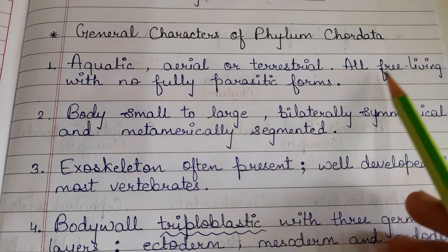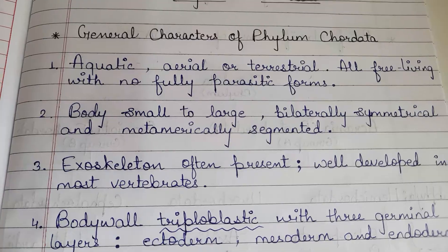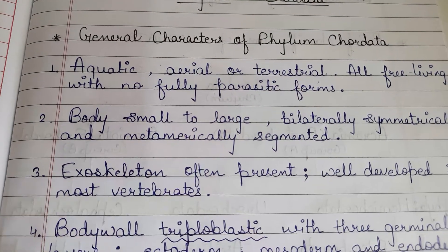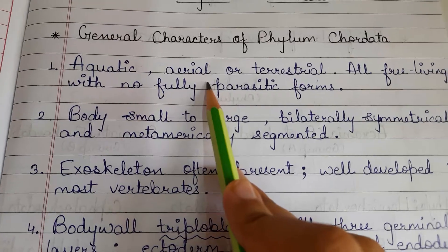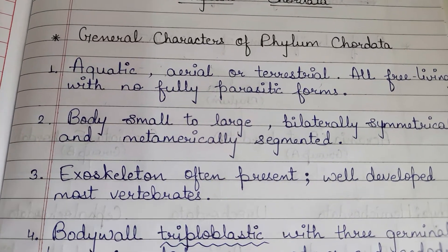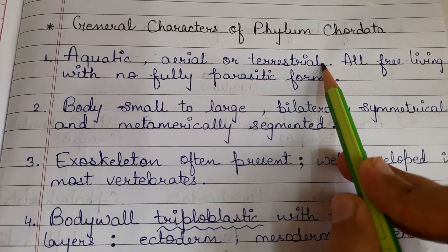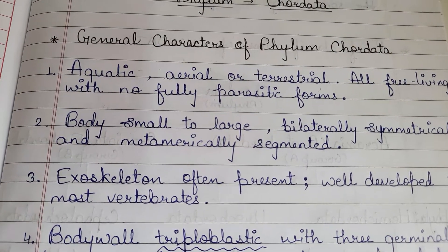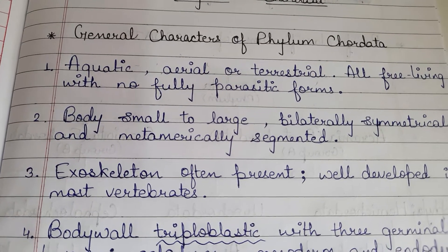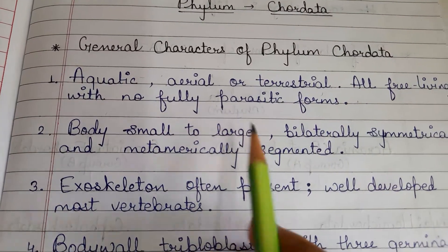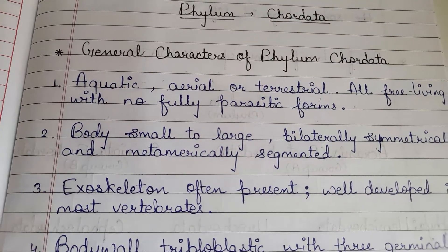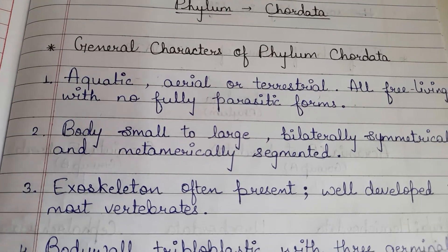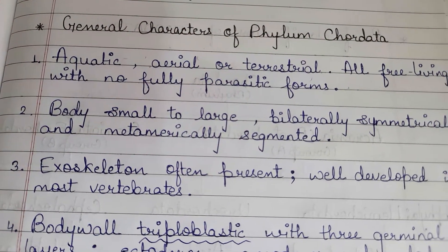First characteristic: members of phylum Chordata are aquatic, aerial and terrestrial — all free living with no fully parasitic forms. It means they can be water animals, flying organisms like aves, or land animals. And they are not fully parasitic — unlike mosquito which is a fully parasitic organism. Chordata members may be semi-parasitic or partly dependent on another host, but they are not fully parasitic.